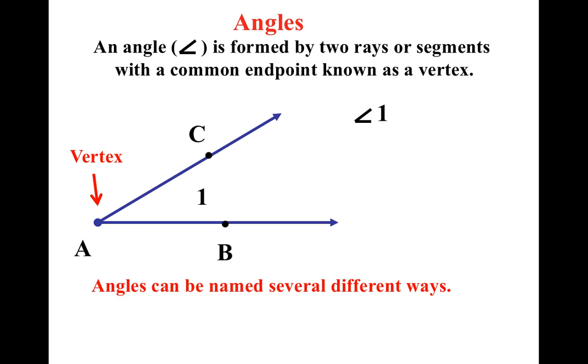And we can write it several different ways. Notice, I could call this angle 1 because 1 is on the inside of the angle. I could call this angle CAB because that surrounds the angle. And a lot of people say, well, why can't I just call it angle BAC? Because that surrounds the angle also. You can. You're going to have to talk to your teacher about which way they would like you to say it. I usually go with this one because it's alphabetical. B comes before C. And you could just call it angle A because there's only one angle coming off of these rays or these segments.